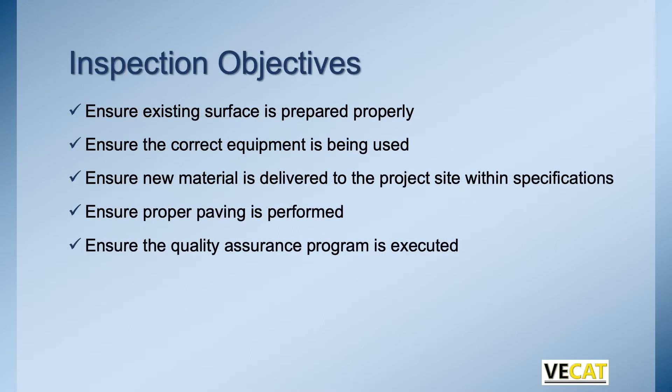What are you trying to do as an inspector? We want to make sure whatever we're laying this slurry or latex on has been properly prepared — if it's been patched out, any irregularities corrected. We want to make sure that the correct equipment is being used. There are requirements within these specs and special provisions for the type of equipment used to pave the material. We need to make sure material is delivered within specs, proper paving equipment is there, and that the QA program is actually executed correctly.